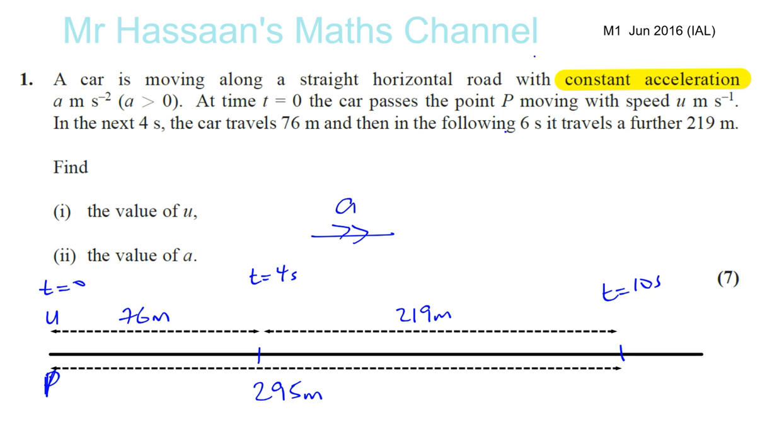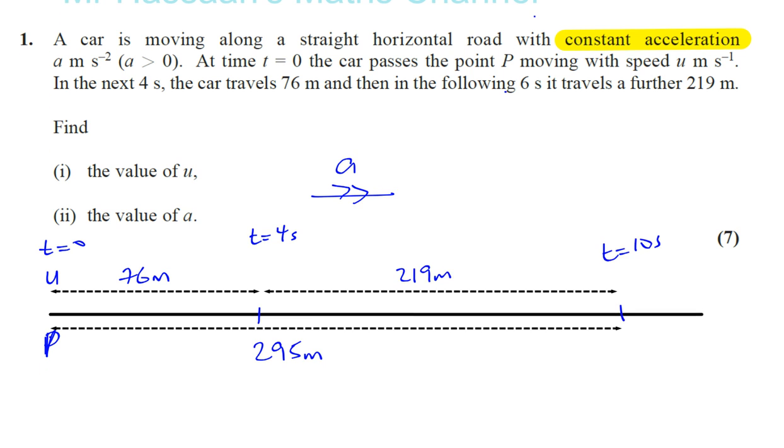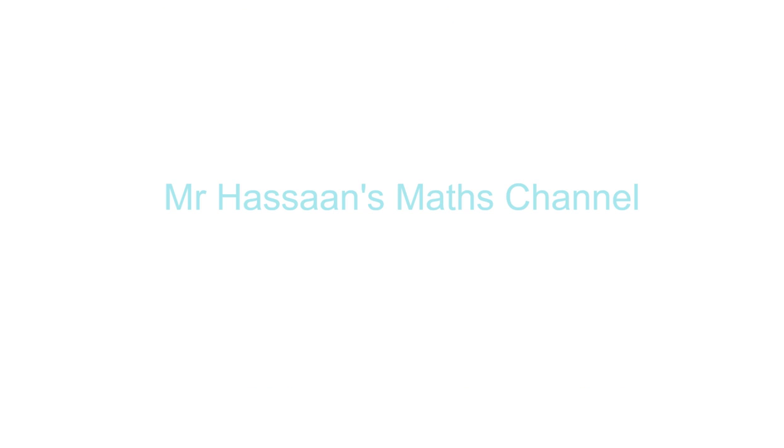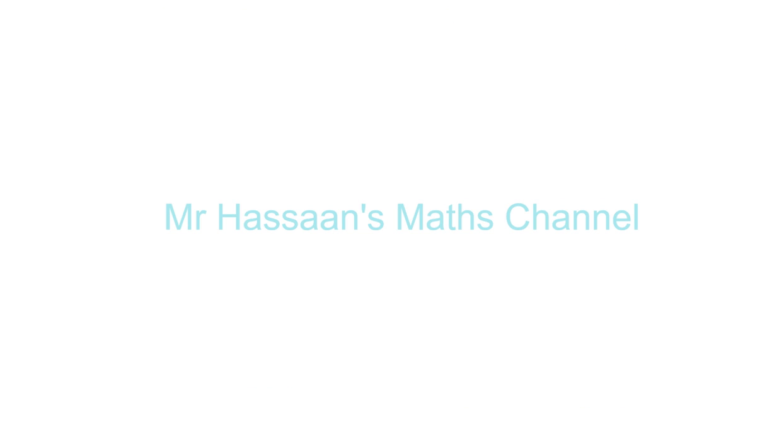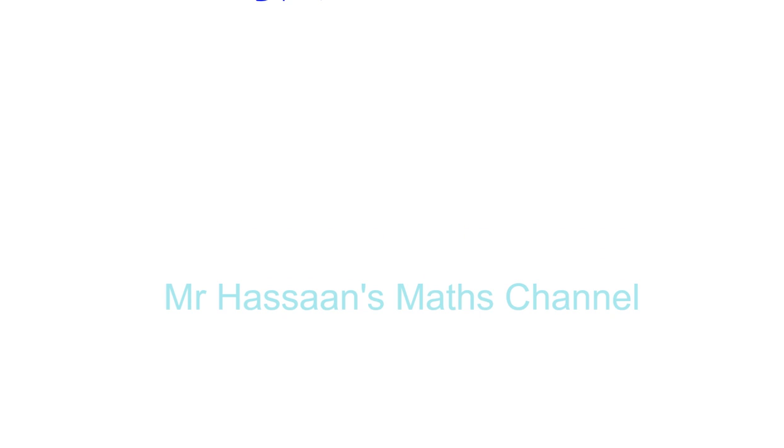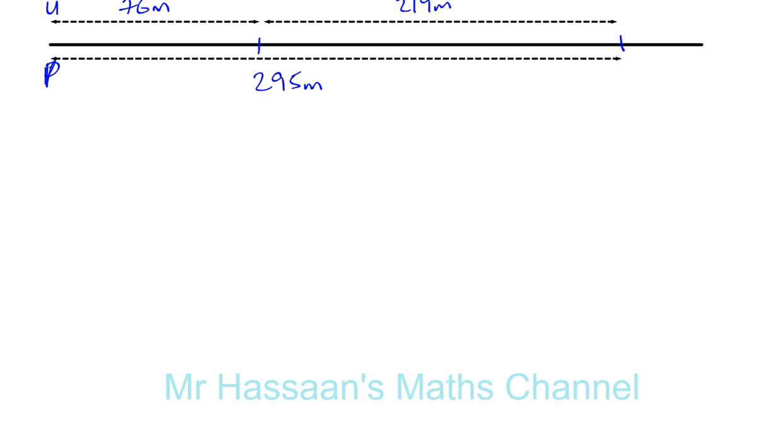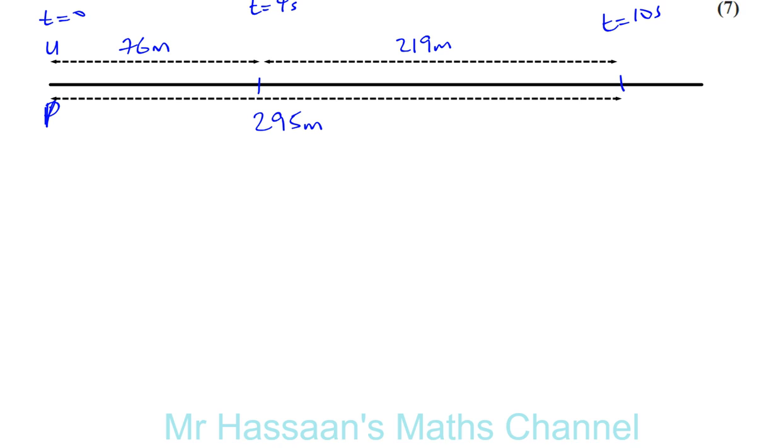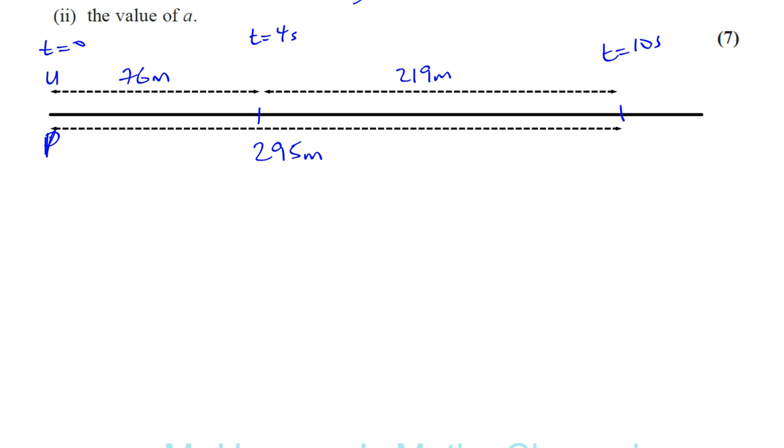Now when you see a situation like this, they've given us information about two different parts of the journey. I'm going to call this part one and this point part two. I'm going to think about part one and write down everything I know from SUVAT. Why SUVAT? Because constant acceleration.